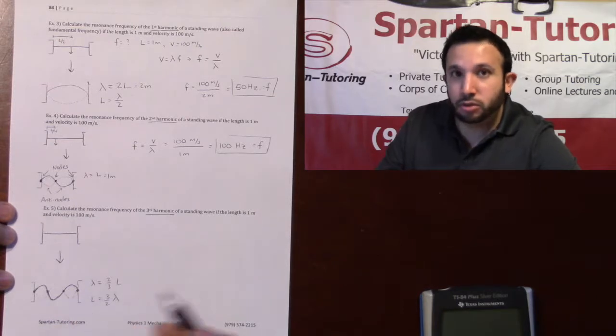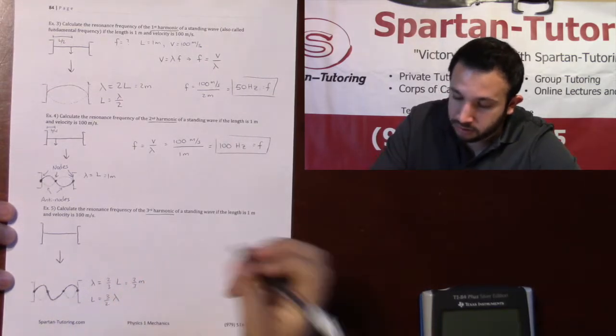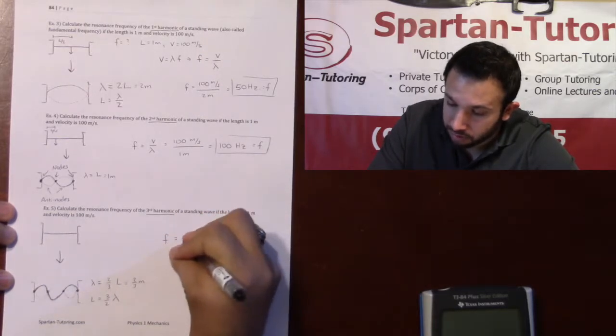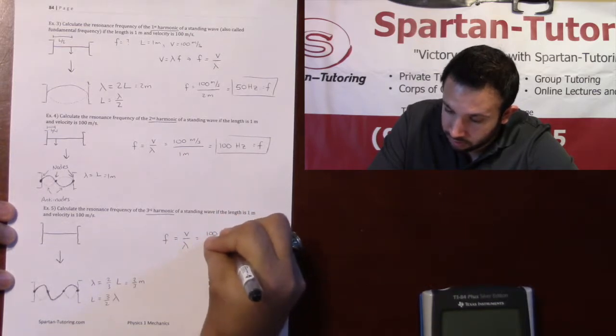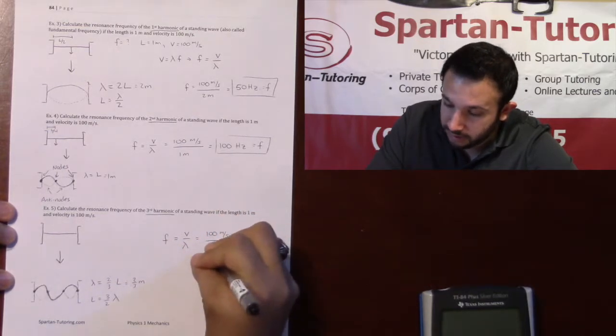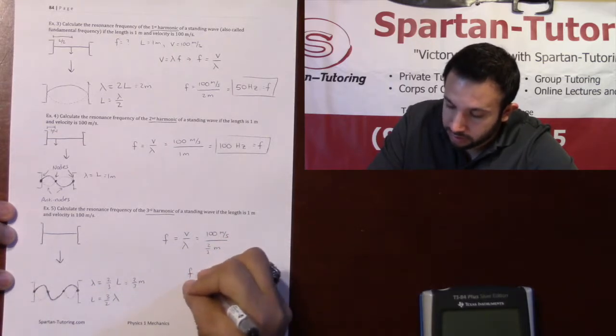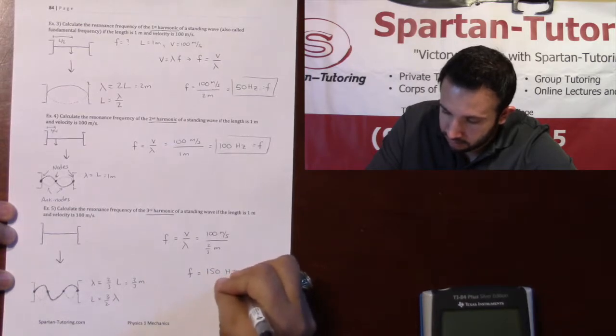And so, in this situation, if lambda is two-thirds your length, this would be two over three meters. And so, your resonance frequency in the third harmonic, V over lambda, is going to be 100 meters per second divided by two-thirds of a meter, which, if you put that in your calculator, should be 150 hertz.